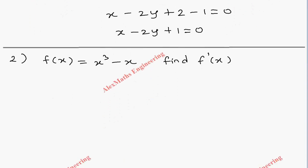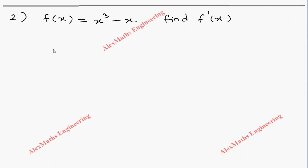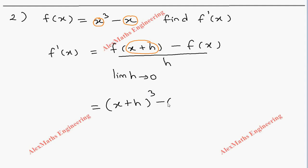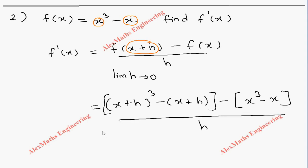Next, we have f(x) = x³ - x and we just need its derivative. The derivative formula is f'(x) = limit as h → 0 of [f(x+h) - f(x)] / h. Now f(x+h) means replacing x with x+h, so we get [(x+h)³ - (x+h)] - [x³ - x], all divided by h, with limit h → 0.